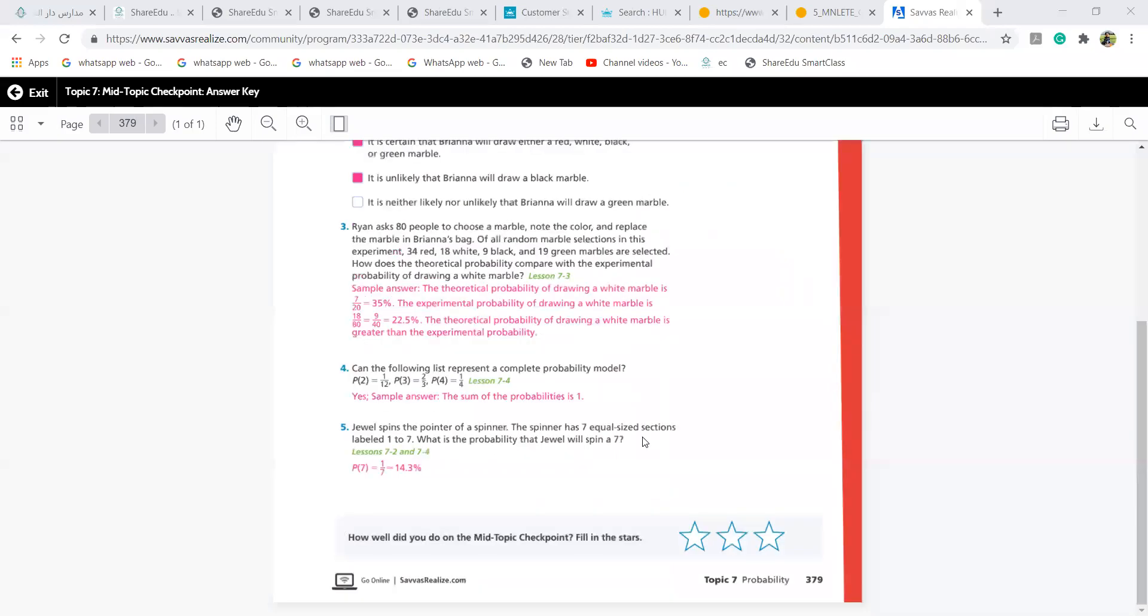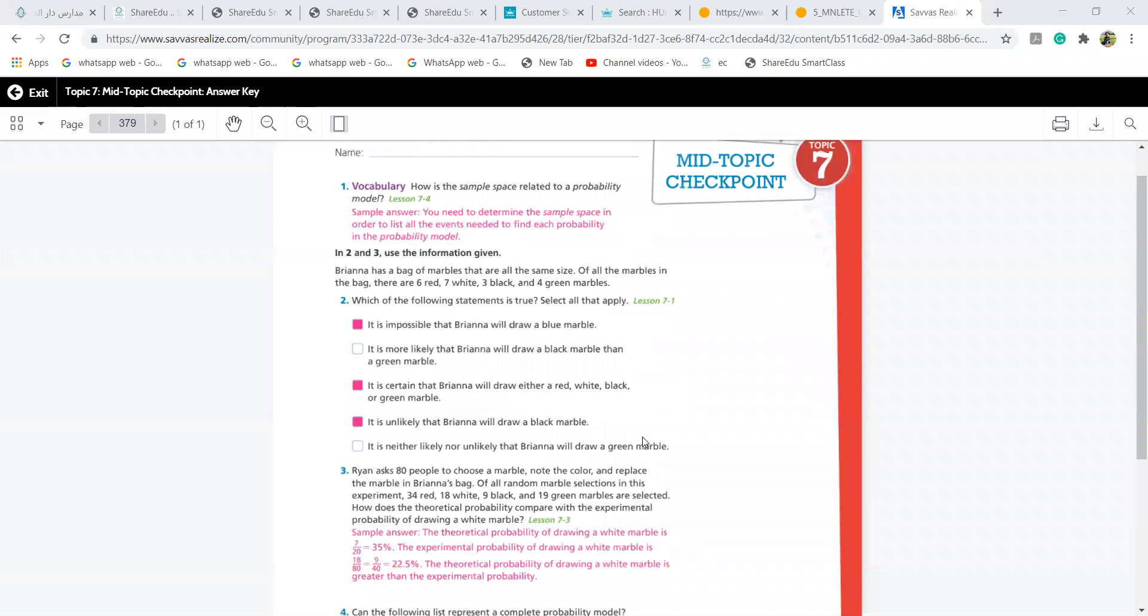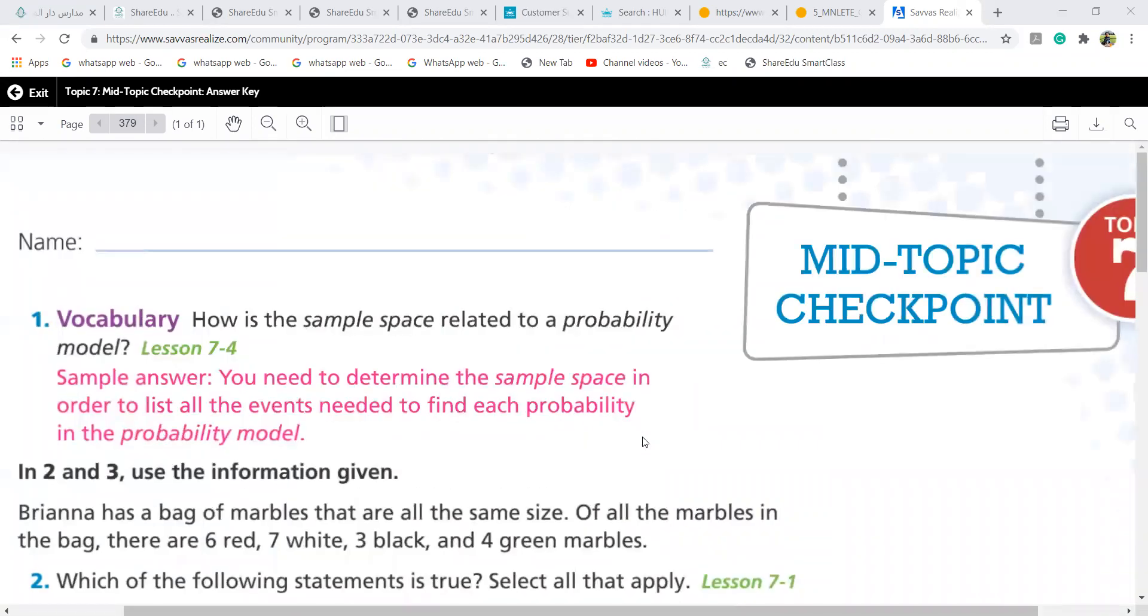So grade seven girls, let us begin with chapter checkpoint. Please turn to page number 379. Now the first question is, how is the sample space related to the probability model? Sample space first is the list of the events girls. You will not divide it by the total number, like the probability of blue. I'll just see how many blue marbles are there, how many red marbles are there. That is called a sample space. Later on, you will divide and that is the probability model. When you find each probability, that is the probability model. But first, the sample space is only the samples given to you.